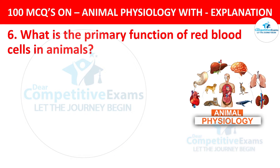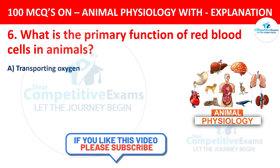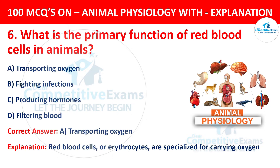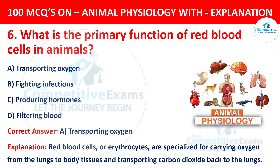Question number 6. What is the primary function of red blood cells in animals? The options are transporting oxygen, fighting infections, producing hormones, or filtering blood. The correct answer is A, transporting oxygen. Red blood cells, or erythrocytes, are specialized for carrying oxygen from the lungs to body tissues and transporting carbon dioxide back to the lungs.